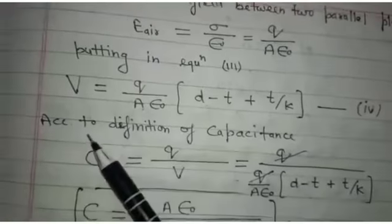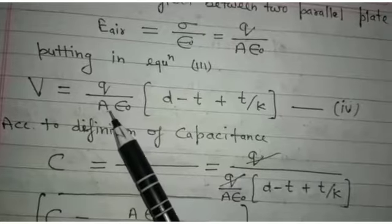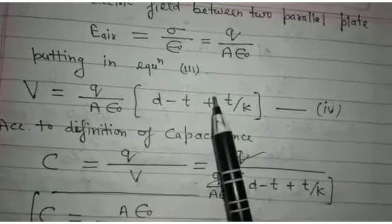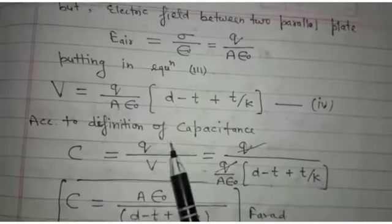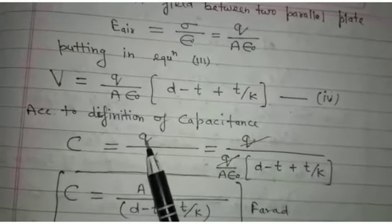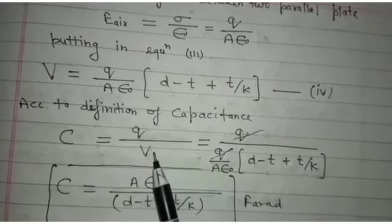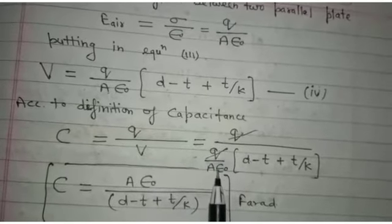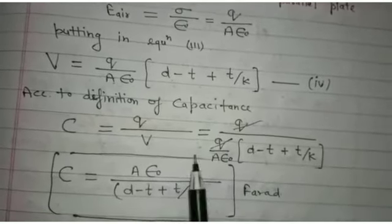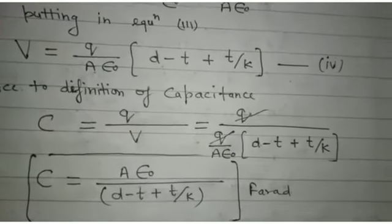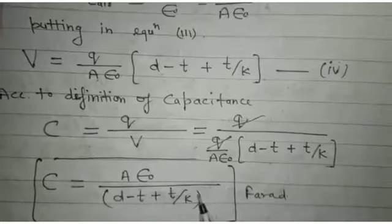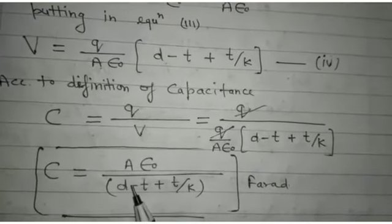So we find the net potential V is equal to q upon A epsilon naught d minus t plus t upon K. Consider equation fourth. For the definition of capacitance C is equal to q upon V. Putting the value of net potential q upon A epsilon naught into d minus t upon K. Now we get the resultant capacitance between two parallel plates A epsilon naught upon d minus t plus t upon K. Thank you.